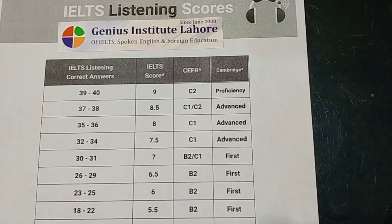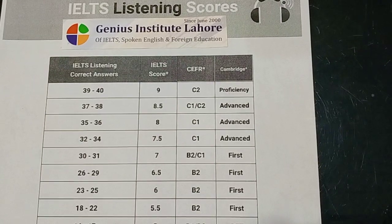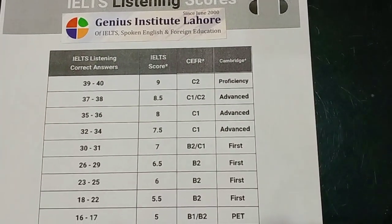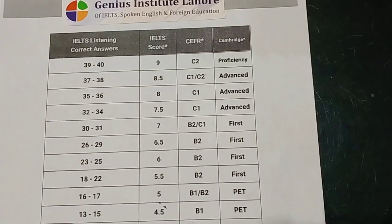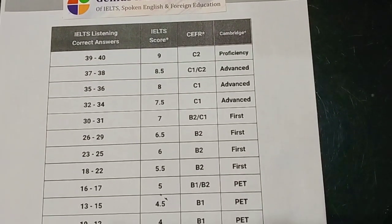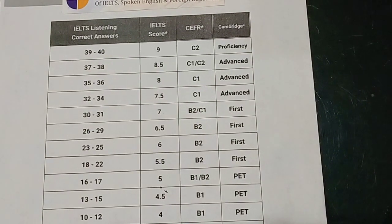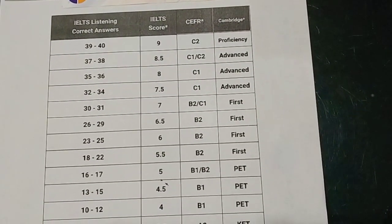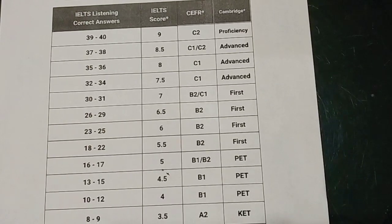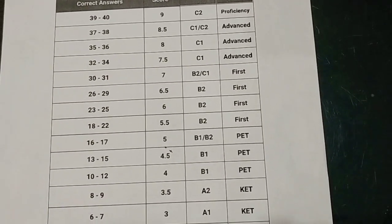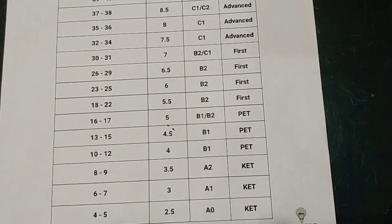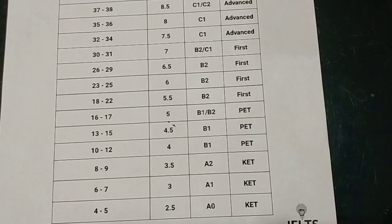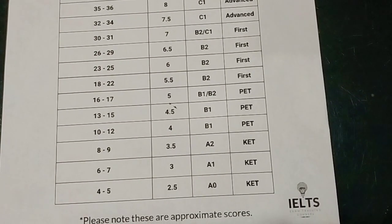For 18 to 22 correct answers, 5.5 band scores will be awarded. In case of 16 and 17 correct answers, you get 5 band scores. For 13 to 15 correct answers, you get 4.5. For 10 to 12, you get 4. For 8 to 9, you get 3.5. For 6 to 7 correct answers, you get 3 band scores. And for 4 to 5 correct answers, you get 2.5.